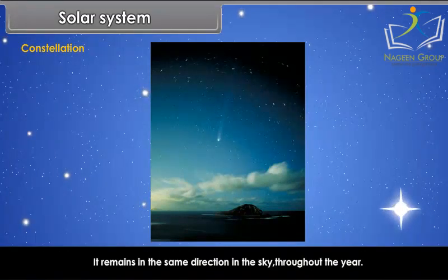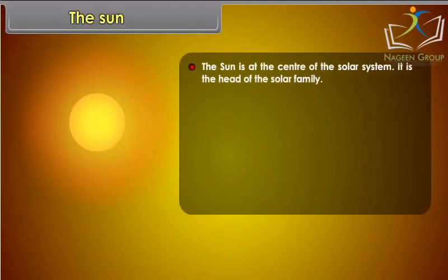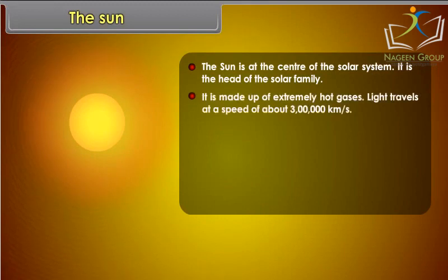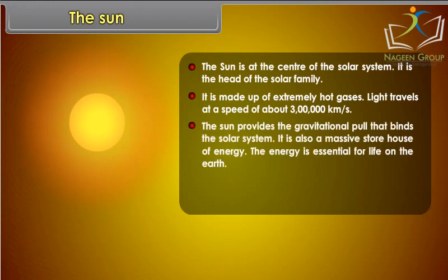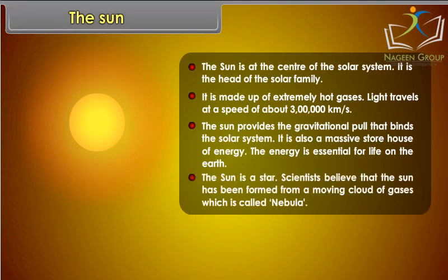It remains in the same direction in the sky throughout the year. The Sun is at the center of the solar system and is the head of the solar family. It is made up of extremely hot gases. Light travels at a speed of about 3 lakh kilometers per second. The Sun provides the gravitational pull that binds the solar system. It is also a massive storehouse of energy, essential for life on the Earth. Scientists believe that the Sun has been formed from a moving cloud of gases called a nebula.